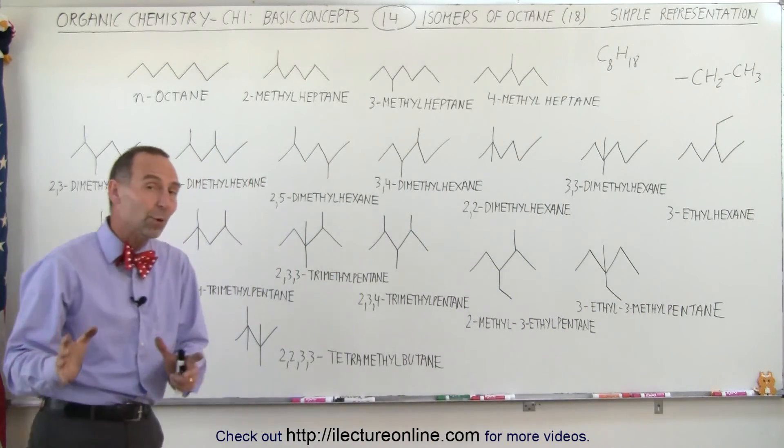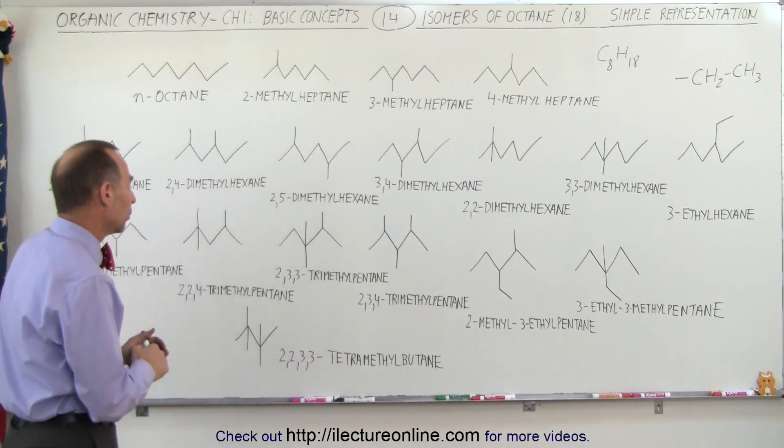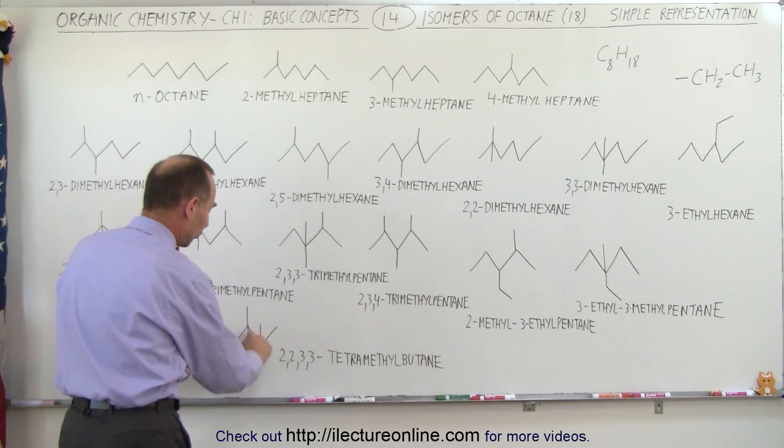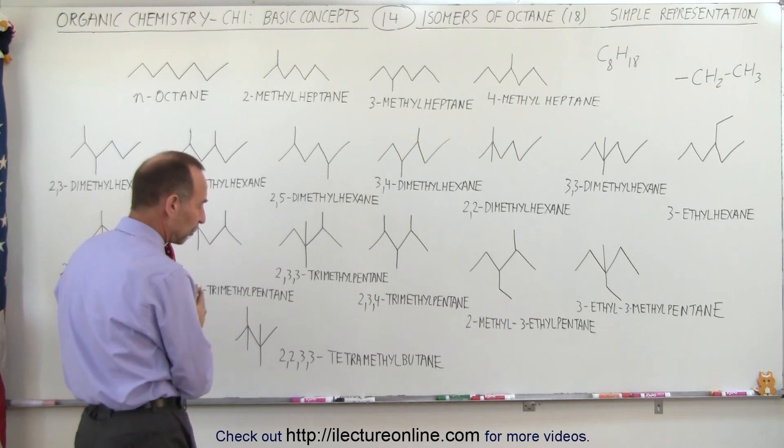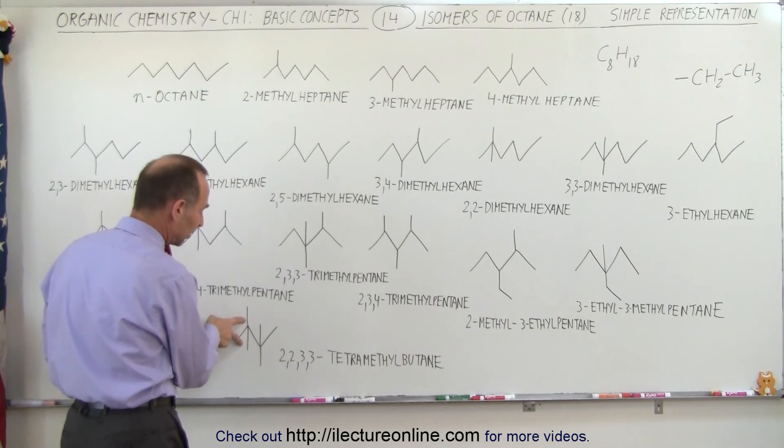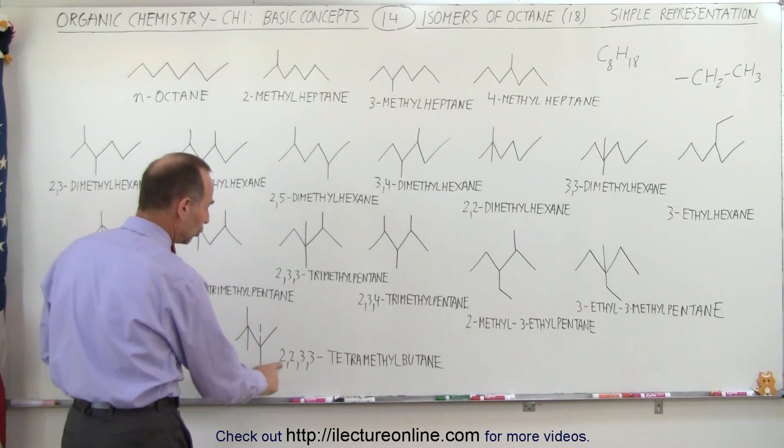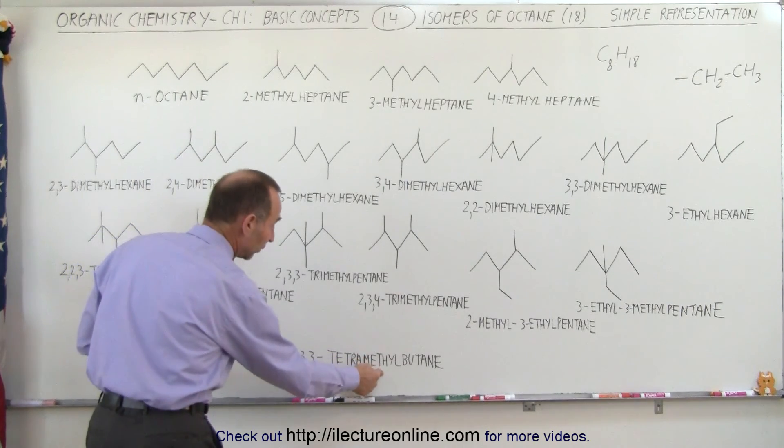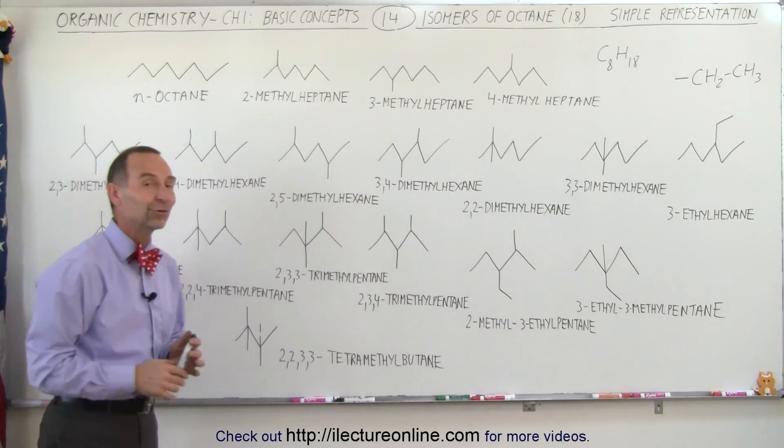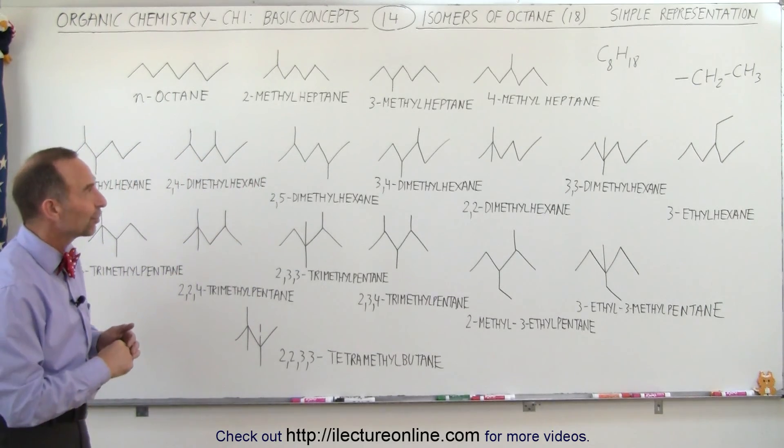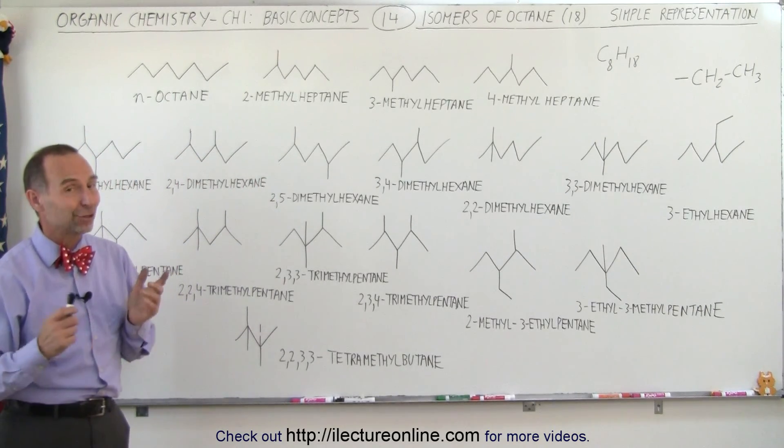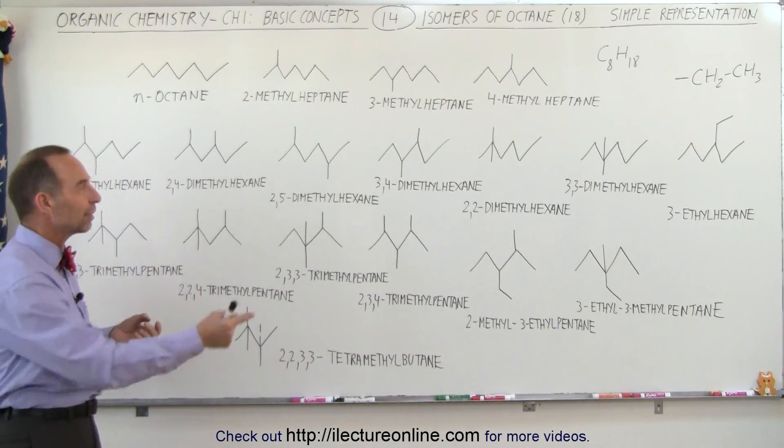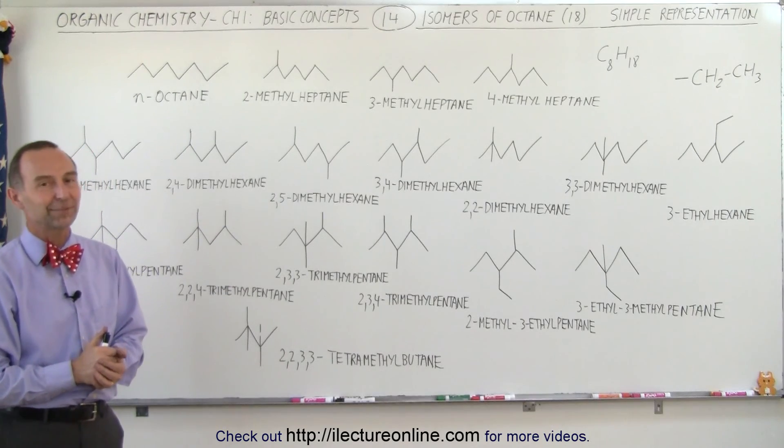Finally, we have one more, the 18th isomer, where we have a butane chain meaning four carbons and four methyl groups connected to them: two to the second carbon, two to the third carbon. We call that 2,2,3,3-tetramethylbutane because there are four methyl groups. And those are all 18 isomers of octane. You can try any other combination and every single time you'll end up with something you already have. These are the only 18 of the set.